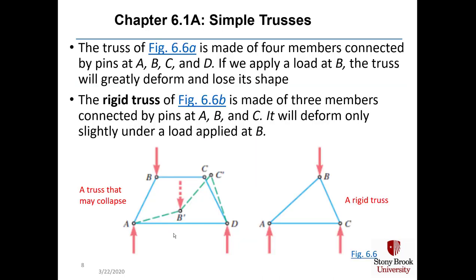The truss of figure 6.6a is made of four members connected by pins at points A, B, C, and D. If we apply a load at point B, the truss will greatly deform and lose its shape, quickly collapsing into the green dotted line. It's not a rigid truss. However, the rigid truss of figure 6.6b is made of three members connected by pins at points A, B, and C, and it deforms only slightly under a load applied at B because that load is distributed to the left at A and to the right at C.